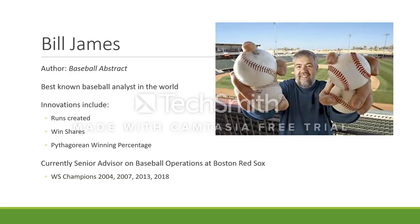Bill James wrote a book in 1977 called Baseball Abstract that changed the way we look at baseball forever. He's known as the pioneer of Sabermetrics, setting the groundwork for the statistical analyses that are widely accepted today. He's currently the senior advisor on baseball operations at the Boston Red Sox, and with them he's won four World Series championships, most recently in 2018.